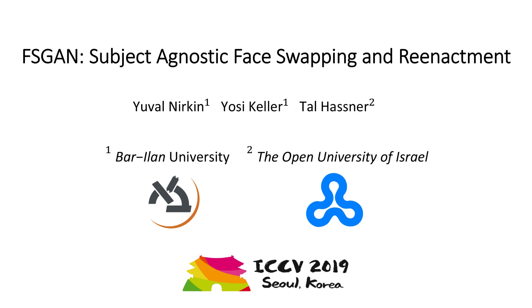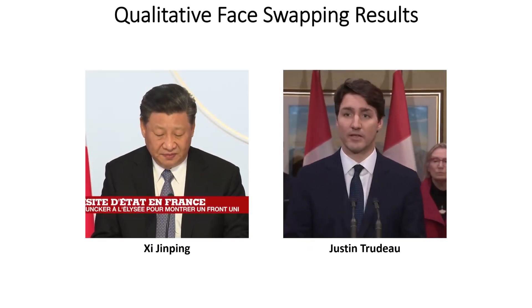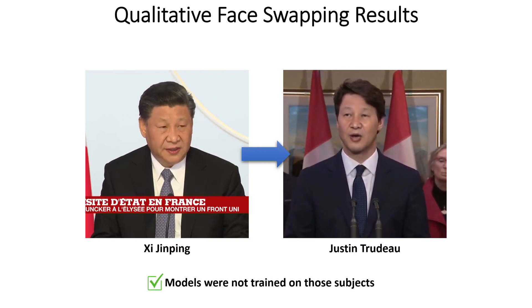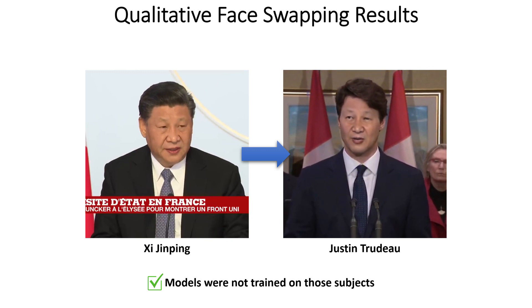We present Face Swapping GAN for subject agnostic face swapping and reenactment. Our method can work on any pair of people without specific training. Therefore, we can produce real-time results on unseen subjects.